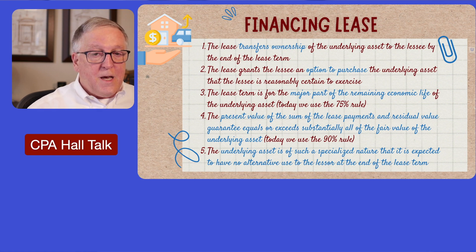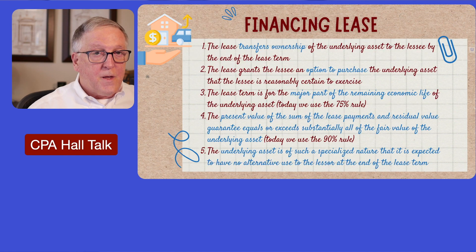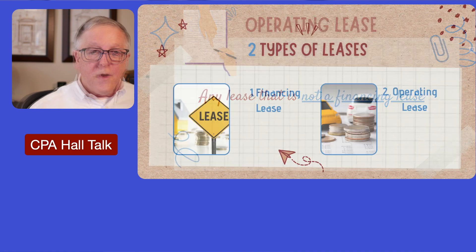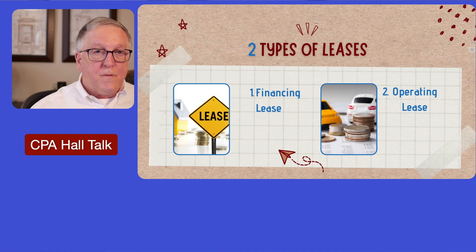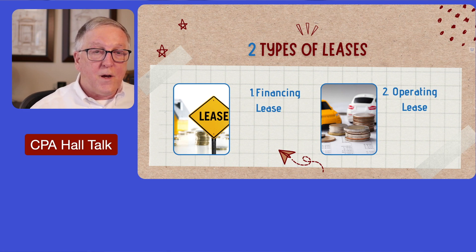If it's not a financing lease, it's going to be an operating lease. First, ask: is it a financing lease? If it's not, then it's an operating lease. Those are your two types of leases under ASC 842. Now let's look at the journal entries — this is where it gets really interesting for each of these types of arrangements.